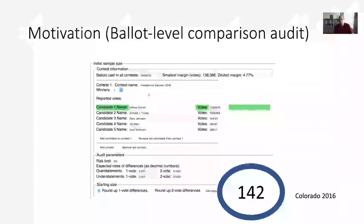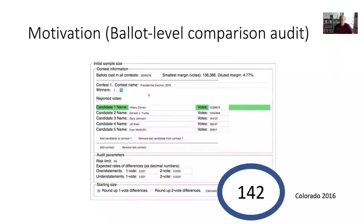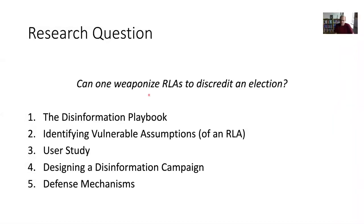The reasoning behind audits is that we want to provide some form of evidence that the election result is correct — not necessarily recounting the whole thing, but doing it in a statistically relevant way. But if the number is so small, can that be misused? That led me to the research question: can one weaponize RLAs to discredit an election? I believe this is actually possible, and I want to show you that in this talk.